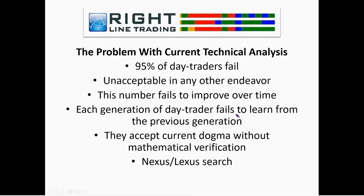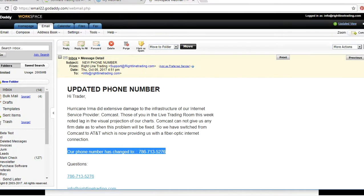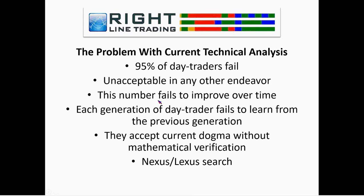Each generation of day trader fails to learn from the previous generation. They accept current dogma without any mathematical verification. If you do a Nexis Lexis world search for any rigorous analysis of an oscillator, MACD, or Fibonacci to determine if these indicators actually increase the precision of your trading, you'll find absolutely nothing. We accept current-day indicators as effective even though we've never been shown any proof via scientific analysis — and that's why the 95% failure rate never improves.